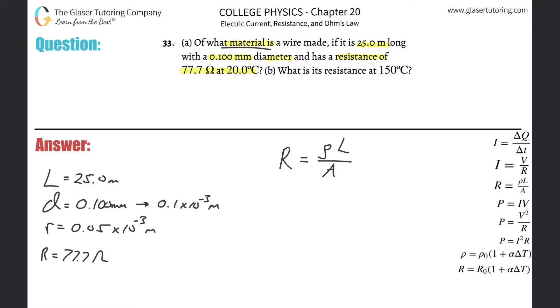What defines the element is going to be its resistivity. Basically, every different element of what the wire would be made out of has a different resistivity. This is what's going to define the particular item. And if we notice, that's what they're asking us. Of what material is a wire made? Basically, if we find the resistivity of it, which is essentially a unique number.